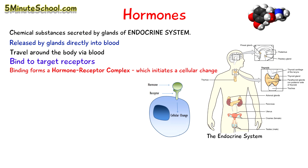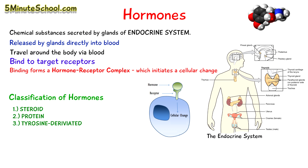These hormones have numerous effects around the body, and there are so many different types of hormones which are made in the endocrine system. Hormones are classified into three types: steroid, protein, and tyrosine-derived hormones.